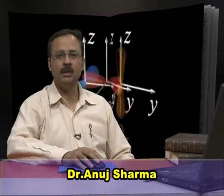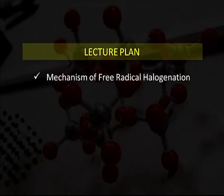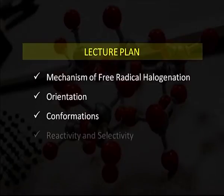In this series of alkanes and cycloalkanes, we have discussed in previous episodes the chemical and physical properties of alkanes, including boiling point, melting point, conductivity, solubility, along with halogenation, sulfonation, nitration, cracking, and pyrolysis. Today in this episode, we will discuss the mechanism of free radical halogenation, orientation in alkanes, conformation of alkanes, and reactivity and selectivity regarding alkanes.